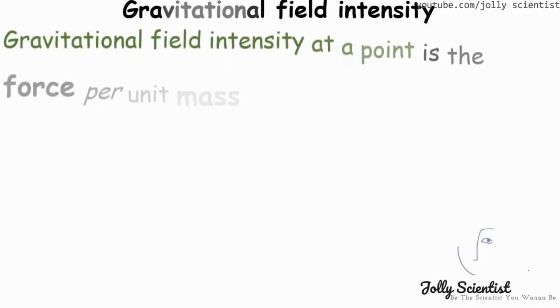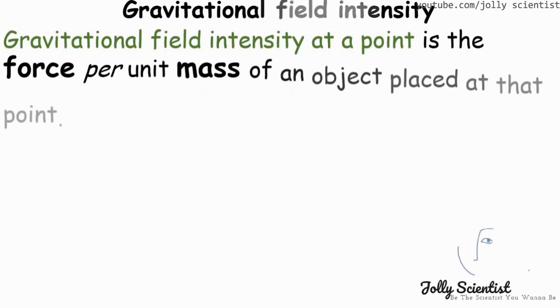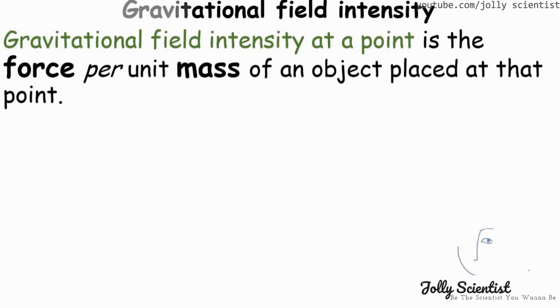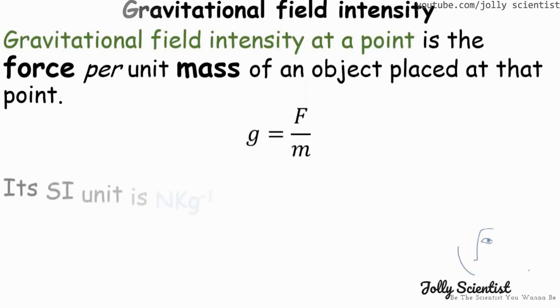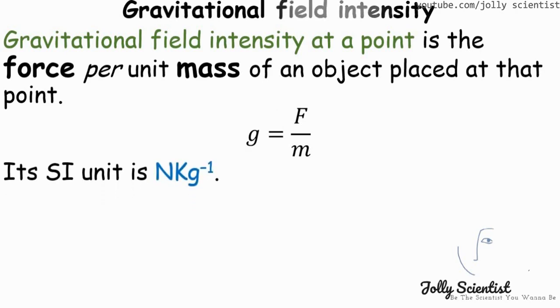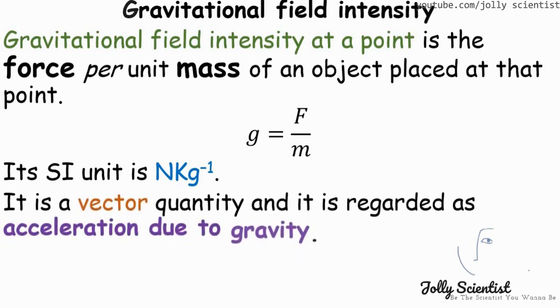The gravitational field intensity at a point is the force per unit mass of an object placed at that point. It is given as g equals F divided by M. Its SI unit is newtons per kilogram. It is a vector quantity and is regarded as the acceleration due to gravity.